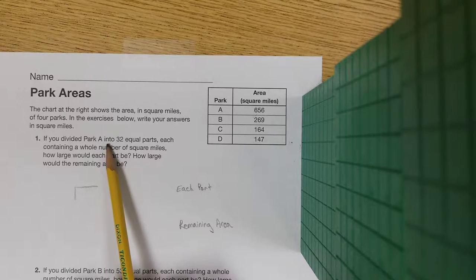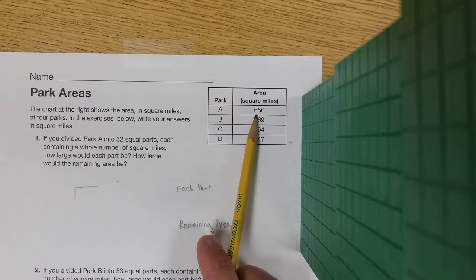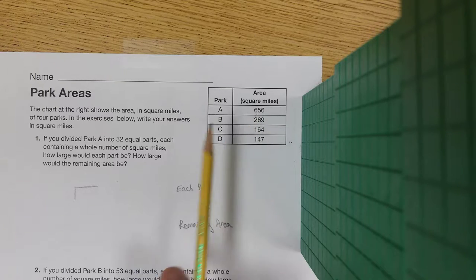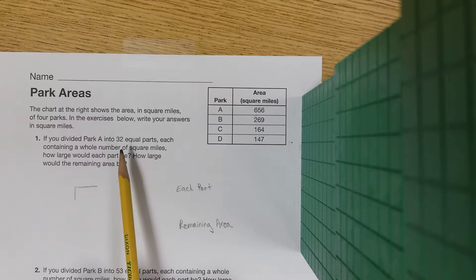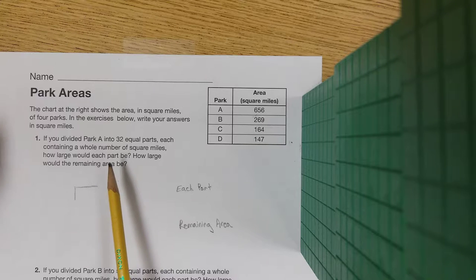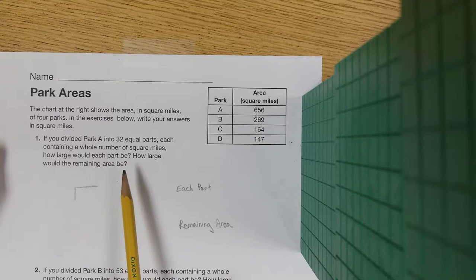Alright, for number one we're looking at Park A. Park A is 656 square miles total. That's our big piece, our starting amount. We're cutting it into 32 smaller parts, and they want to know how much would be in each one of those parts and what would be the remainder.